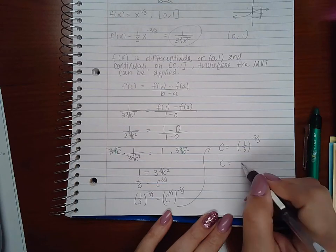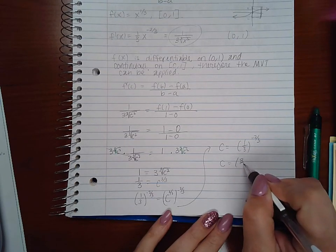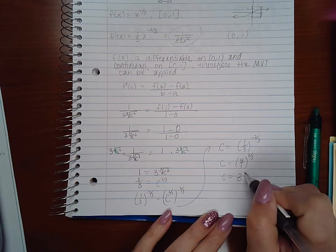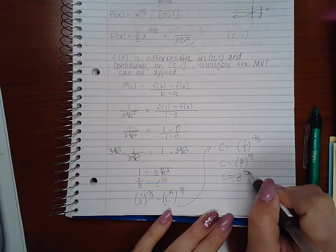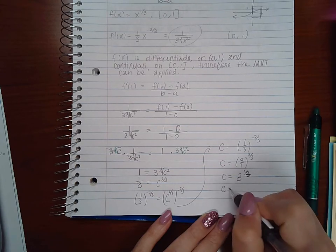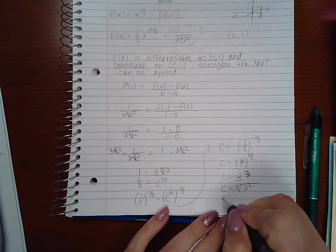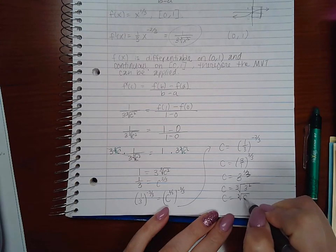Well the negative exponent will flip this fraction around giving me 3, and then I can write it back into radical form. Then I get c equals the cube root of 9.